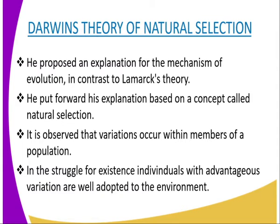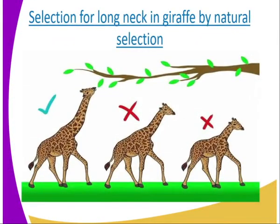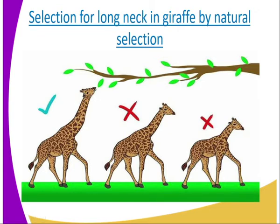In the struggle for existence, individuals with advantageous variations are well adapted to the environment. For example, with the giraffes — since they are suitable to the environment, they are selected for, hence survive and reproduce. Those that are poorly adapted perish and do not transmit their characteristics. This is called survival of the fittest. In our diagrammatic presentation, the short-necked giraffes, because they are lacking food, will eventually die as they cannot reach the twigs. But the long-necked giraffe is able to reach the leaves and will reproduce, and its successive generations will have long necks, while the short-necked ones will not survive.